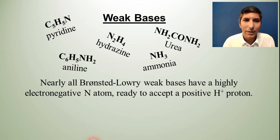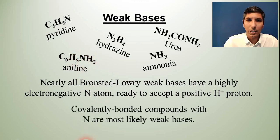And these weak bases, these Bronsted-Lowry weak bases are generally going to have this highly electronegative nitrogen atom that is ready to accept a positive hydrogen ion proton. Now remember according to the Bronsted and Lowry definition, a base is going to accept that H+ ion. So these NH combinations make this a very convenient combination. So normally if you see a covalently bonded compound that has nitrogen and hydrogen in it, it's probably going to be a weak base.